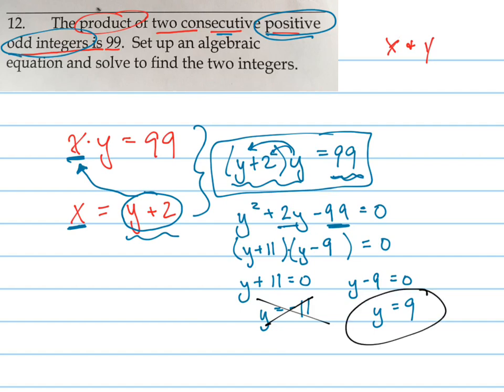I'm not done yet. If y equals 9, what does x equal? You plug it back in, exactly. Plug 9 in, and I get that x equals 11. So the two integers, solve to find the two integers. The integers are 9 and 11.